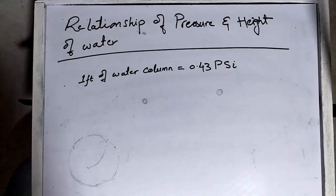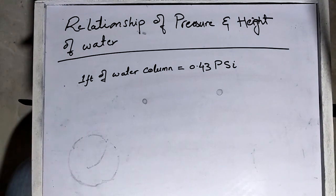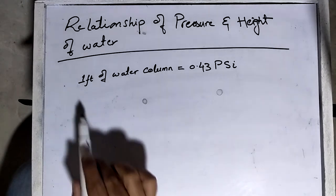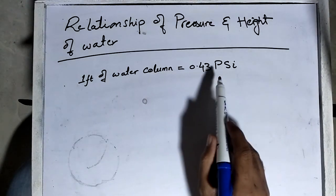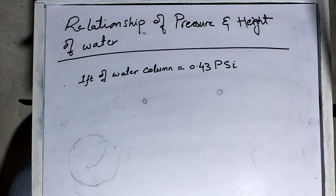Welcome to the channel, the Practical Study Guys. Today we are going to learn the relationship between the pressure and height of water. One constant factor which you need to memorize is that one foot of water column exerts 0.43 pounds per square inch pressure.